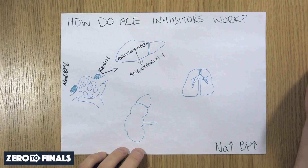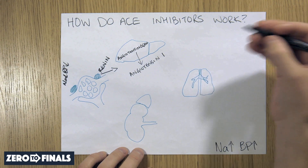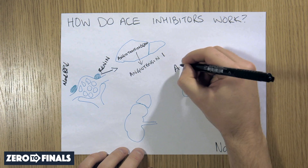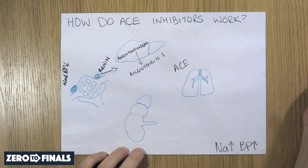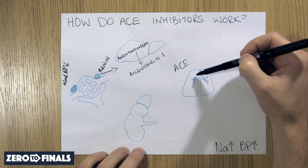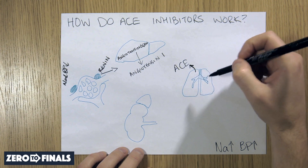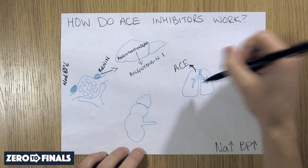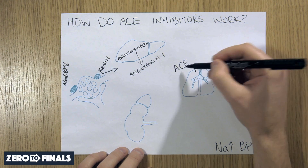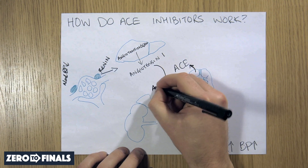Angiotensin I doesn't really do much. It just sits in your blood, floating around, until it comes into contact with something called angiotensin-converting enzyme, which basically does what it says on the tin. It comes from the lungs — it sits in the lungs — and as angiotensin I passes through the blood vessels in the lungs, the angiotensin-converting enzyme turns it from angiotensin I to angiotensin II.